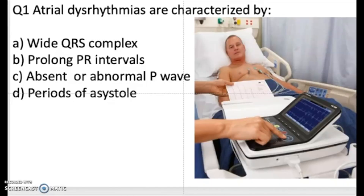The first question on the PowerPoint states: atrial dysrhythmias are characterized by — A) narrow QRS complex, B) prolonged PR intervals, C) absence or abnormal P waves, D) periods of asystole. Take a moment to see if you can come up with the answer. The correct answer for question number one is C — absent or abnormal P waves.